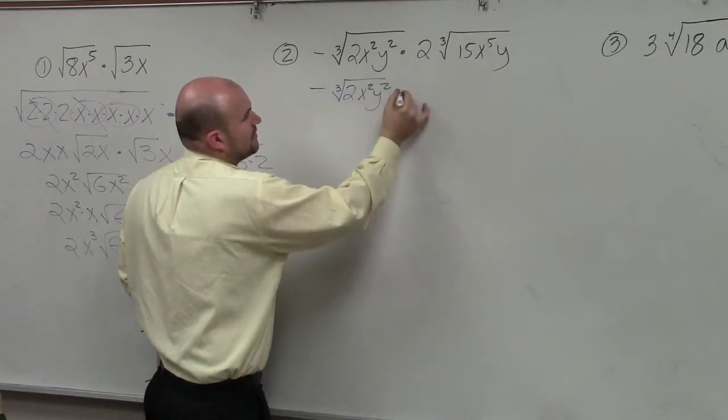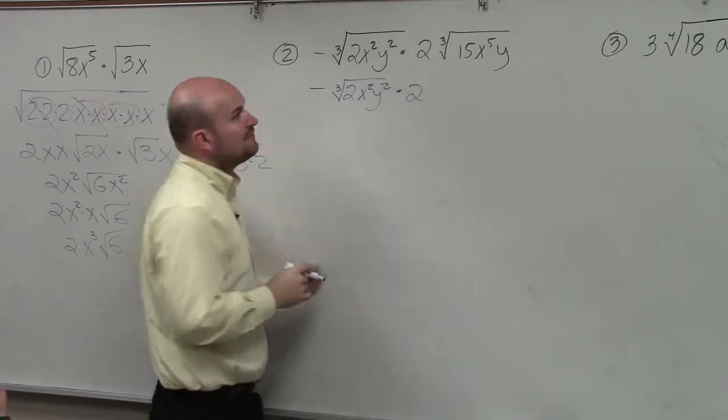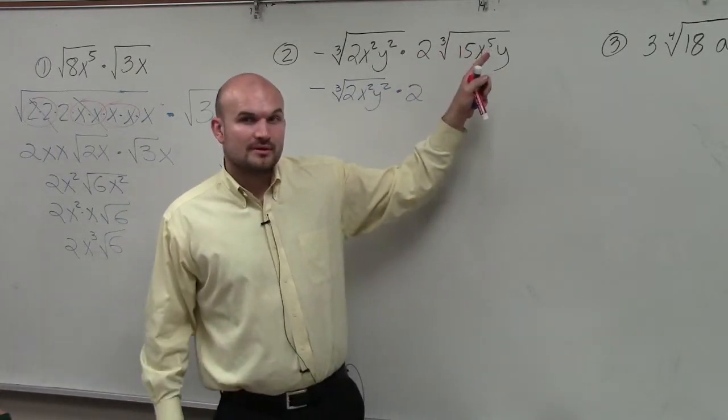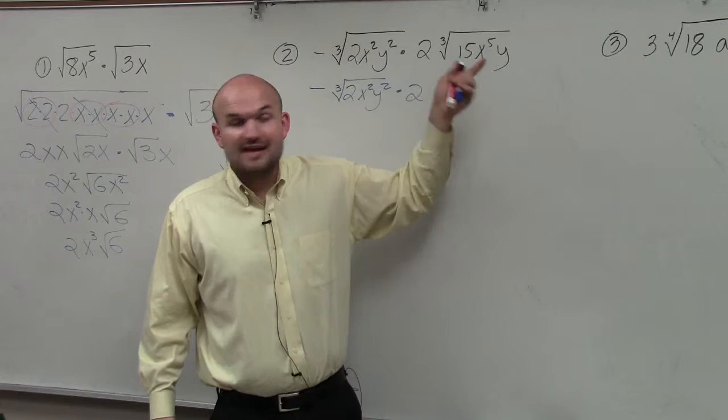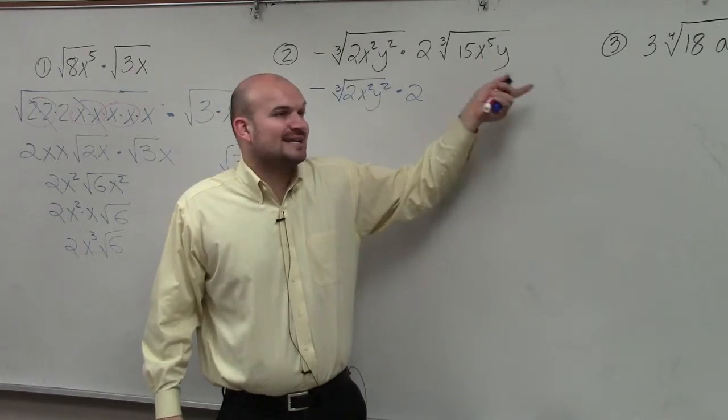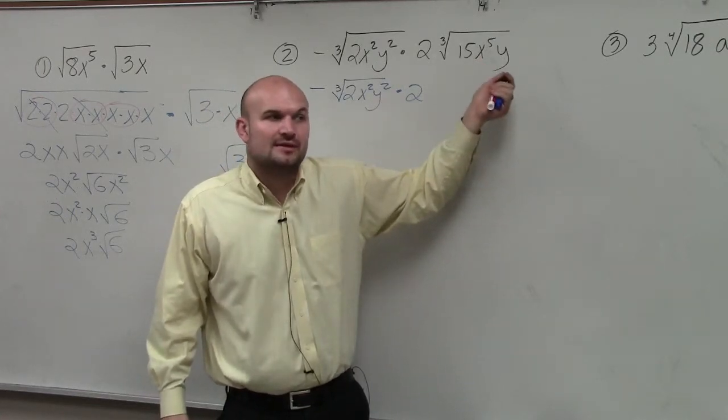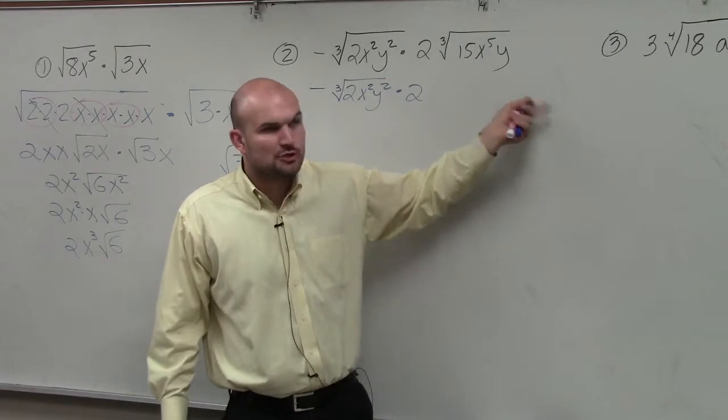2x squared y squared times 2. However, the cube root, I can simplify the cube root. If I break down 15, though, I get two prime numbers 5 times 3. So I can't simplify the cube root of 15.